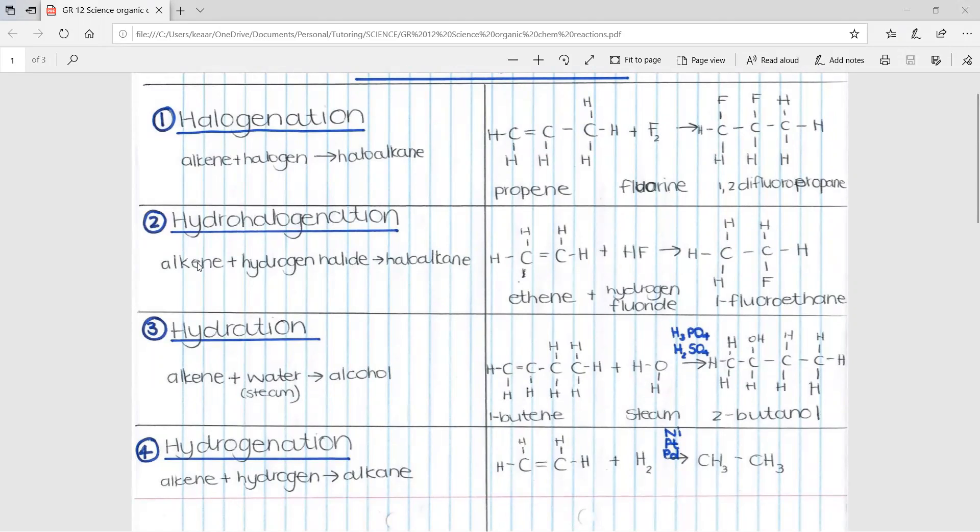Hydrohalogenation, this is when you have an alkene and you add a hydrogen halide to form a haloalkane. For example, you have ethene and you add hydrogen fluoride. Once again, this hydrogen and fluorine add onto the carbons that had the double bond and this forms 1-fluoroethene. And a side note for number two is that no water must be present in this reaction.